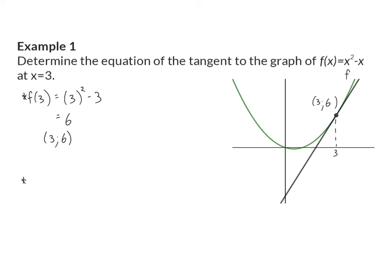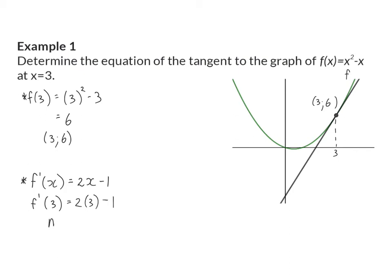Next, we can determine the gradient of this tangent, and for that we know the gradient is the derivative of this function at the point x is 3. To get this derivative, I'm going to use my rules of differentiation. The exponent of 2 in my first term goes to the front and I subtract 1 from the exponent. The second term is linear, and the derivative is the constant in front. Here we now have the gradient at any point, but we are looking for the gradient at x is 3, so we substitute x with 3, and we'll see that the gradient at x is 3 is 5.